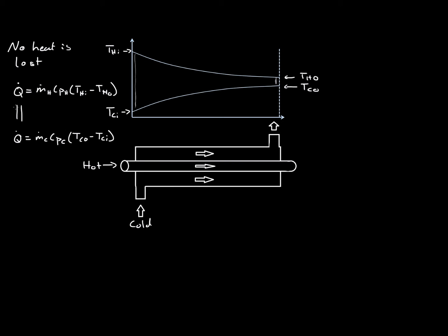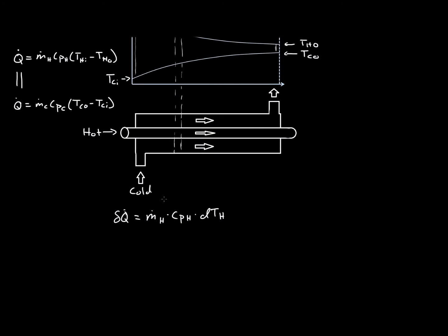Now let's do the heat loss per a section of area — the heat loss in some infinitesimally small area. So δQ̇ = ṁ_H · C_PH · dT_H, the change in temperature of the hot water in that section. The same is true for the cold water: δQ̇ = ṁ_C · C_PC · dT_C, the infinitesimally small change in cold water temperature.